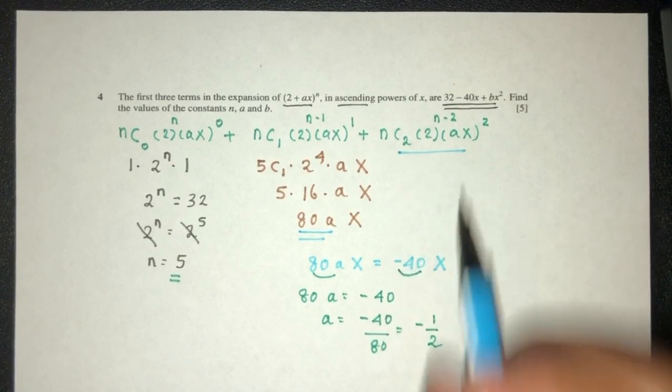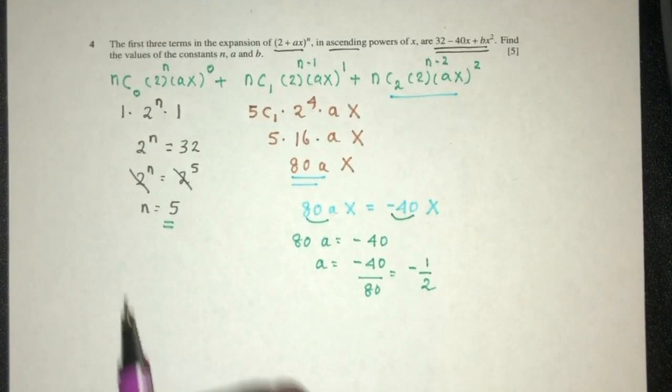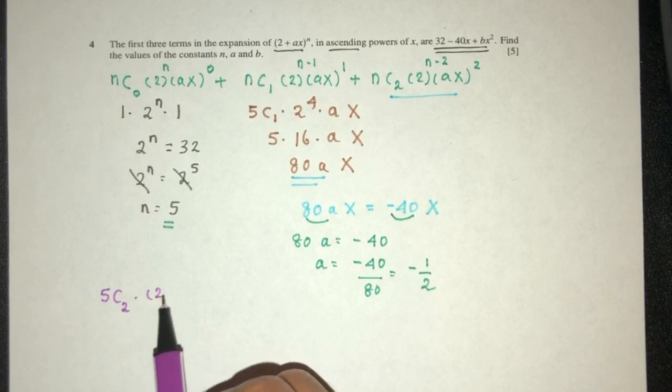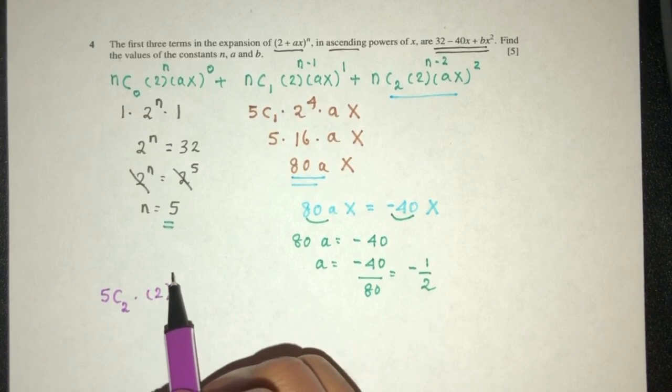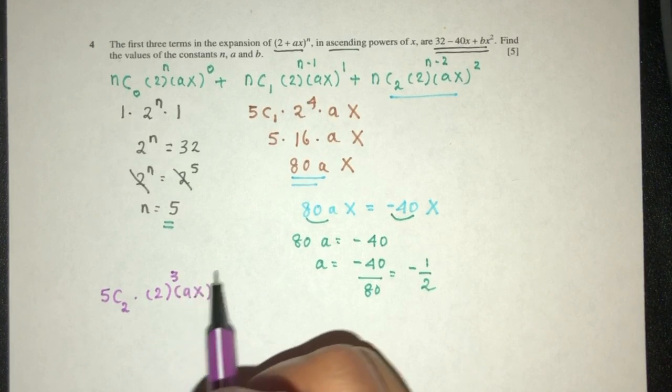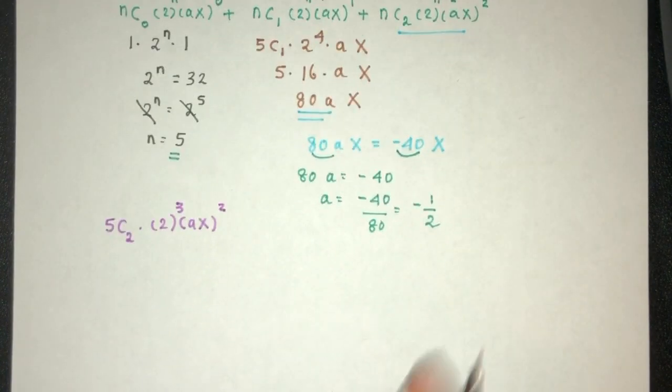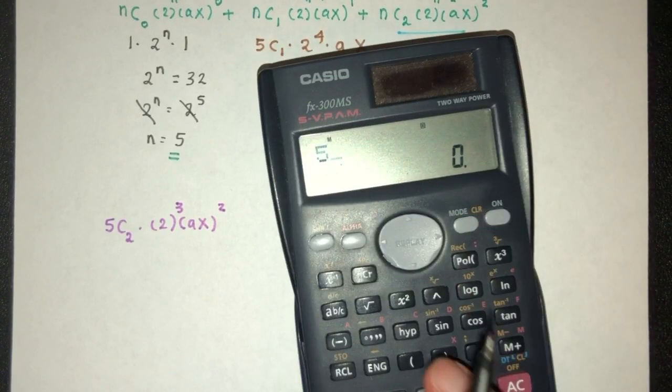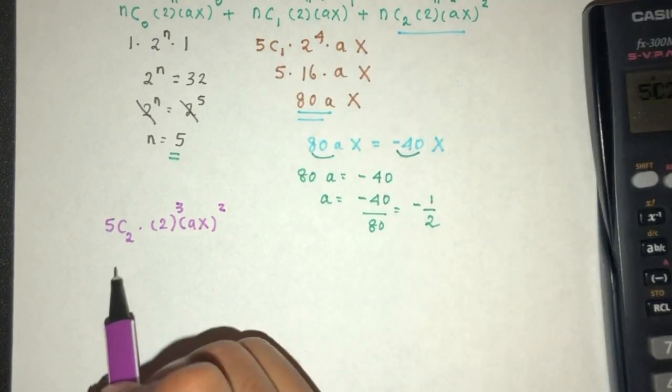Now, for the last one, we have to expand this. Again, n where it is 5 choose 2. Here we have 2 power, n is 5 minus 2 will be 3. Here we have ax, that should be power 2. Now, one by one, 5 choose 2 is what? Let's check. That should be 10.